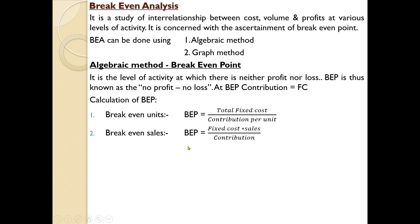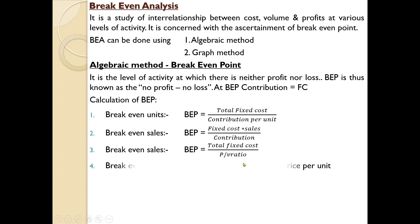Another equation: break-even point in units into selling price per unit gives break-even sales — that is the simplest equation. Next: calculation of profit at a given level of sales. The organization might go through different levels — points below the break-even point as well as points above the break-even point. In some questions, they may ask: calculate profit at a given level of sales, where sales is given and you need to find the profit.